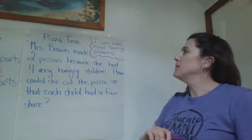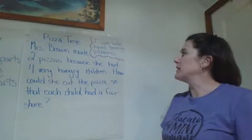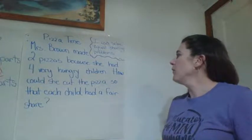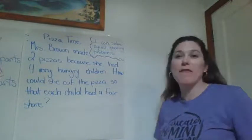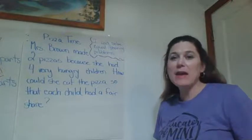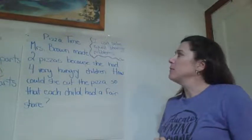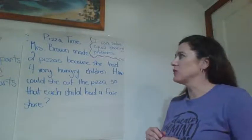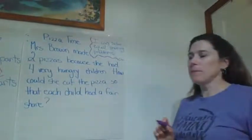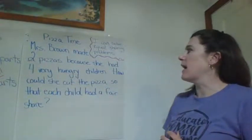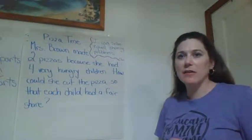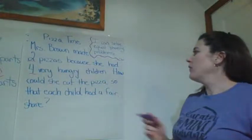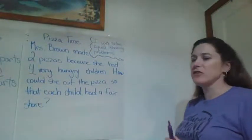So Pizza Time: Mrs. Brown made two pizzas because she had four very hungry children. How could she cut the pizza so that each child had a fair share? Let's read this again. Mrs. Brown had made two pizzas — let's underline that, it's a number. Two pizzas because she had four very hungry children. I see a number here again, I'm going to underline it. How could she cut the pizza so that each child had a fair share?